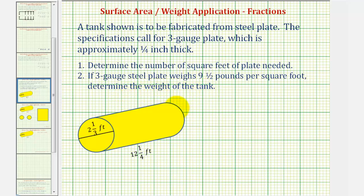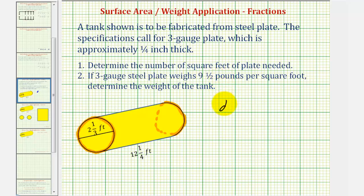Let's begin by considering the key components of our tank. First, notice how both ends are circles, and the diameter of the tank is two and one-third feet. So let's let D be equal to two and one-third feet, but let's write this as an improper fraction. Two and one-third as an improper fraction has a denominator of three. We multiply three and two to get six, then add the numerator one to get seven. So two and one-third is seven-thirds, and the diameter is seven-thirds feet.